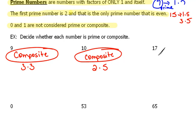Now 17. 17 is a prime number because the only factors of 17 are 1 times 17. And that's it. There's nothing else that we can multiply together to get that.